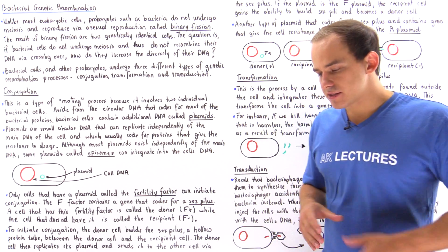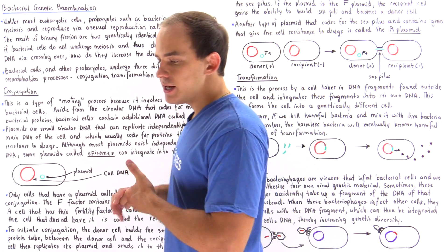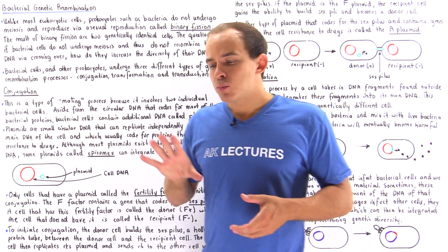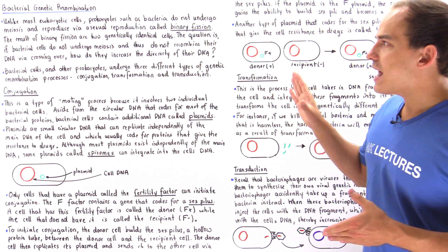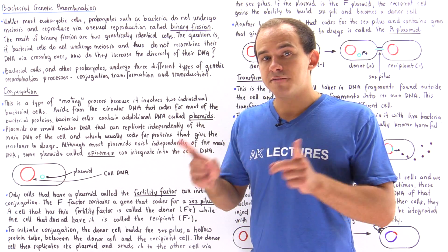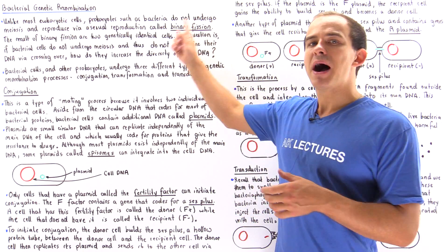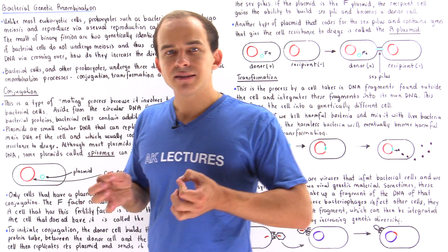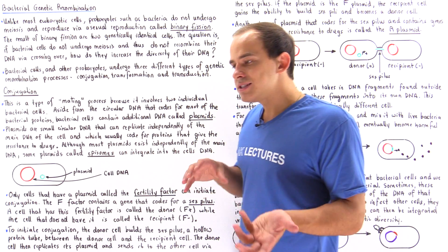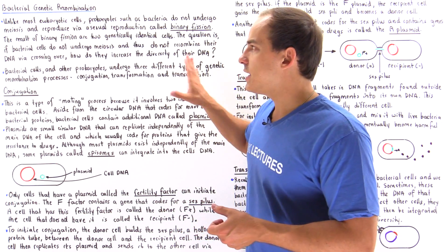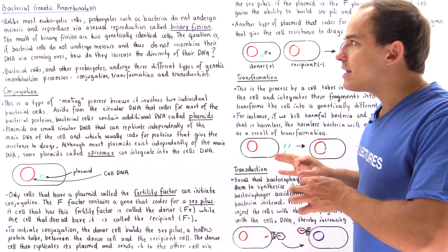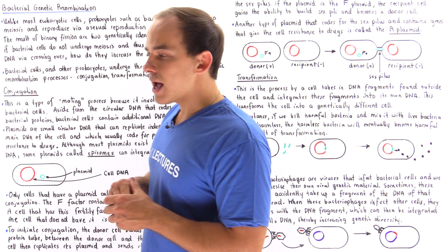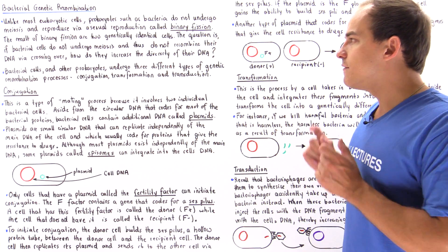Eukaryotic cells diversify their DNA using crossing over, which takes place in meiosis. Prokaryotic cells, such as bacterial cells, do not undergo meiosis and instead divide via binary fission. The problem with binary fission is that we produce two genetically identical cells, which means it is not a way to diversify DNA.